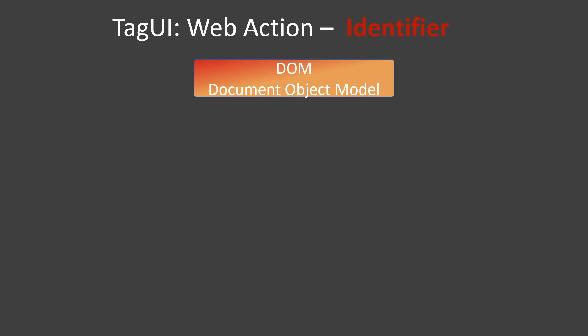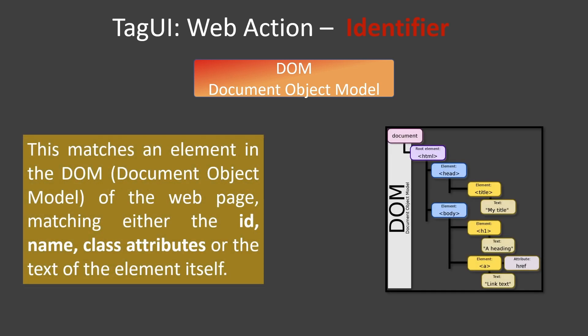DOM, often referred to as Document Object Model, is historically any web page on the browser - technically a document. The document is structured in a specific language which is a collection of various tags we call HTML tags. These tags have attributes or properties such as id, name, and class which can be used to identify them. Let's see an example in detail to understand this.